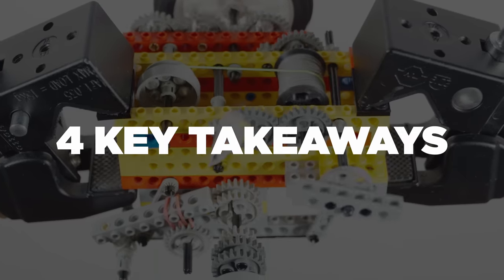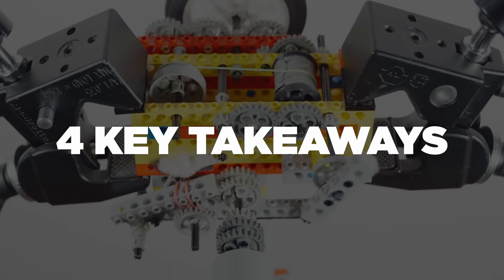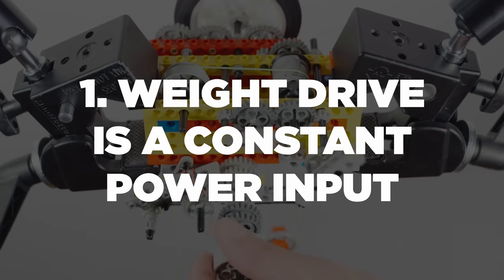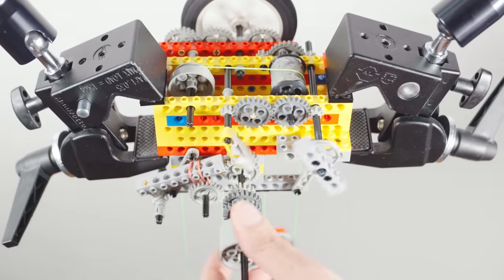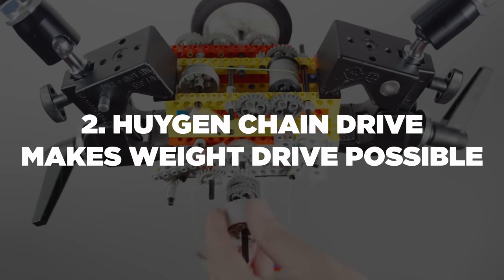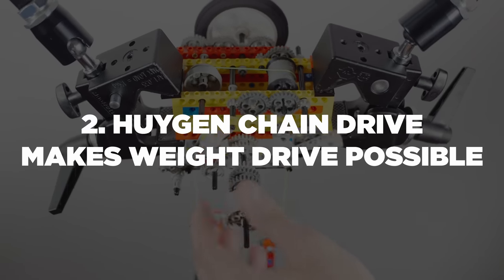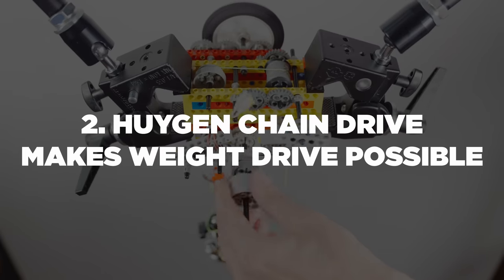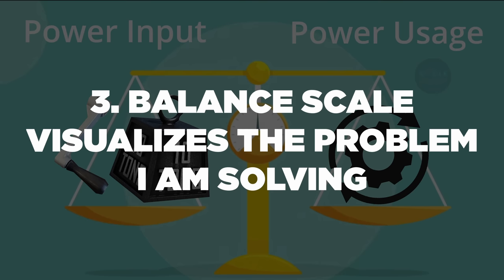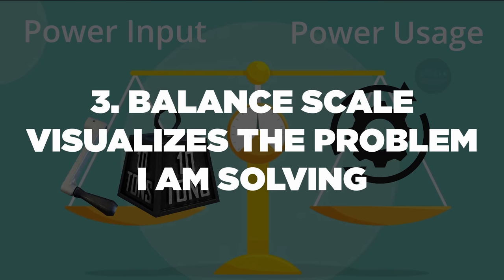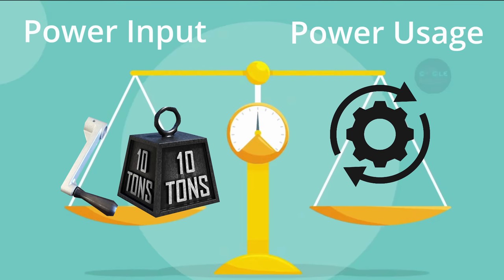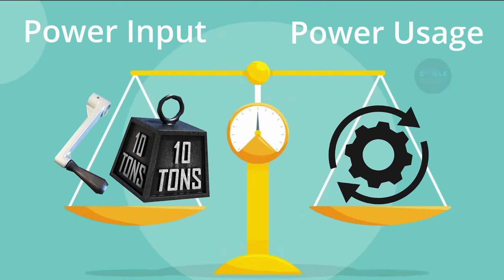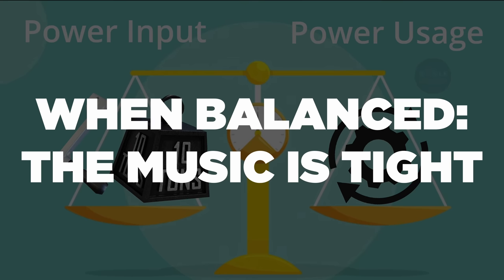Right now there are four key takeaways from all this. First of all, a weight drive is a constant power input. Secondly, a Huygens chain setup allows us to have a weight hanging still in the air and we can play continuous music. And thirdly, keep this visualization of the balance scale in mind. This is really the best way to understand the Marble Machine 3. If the scale is balanced across time, the music will be tight.